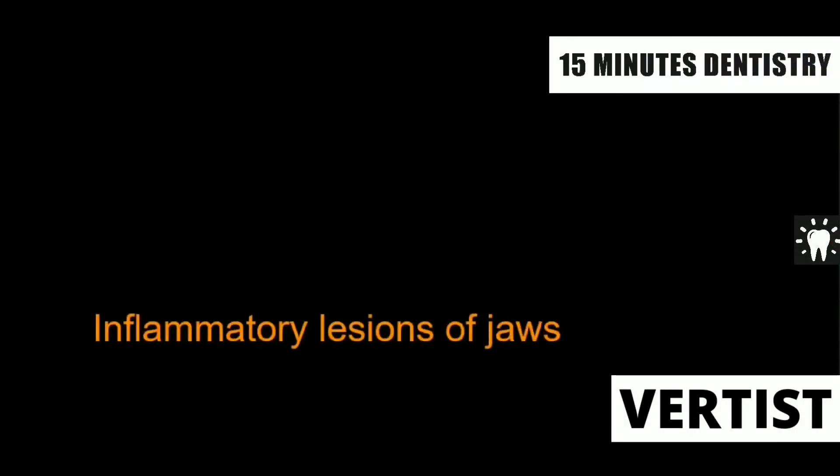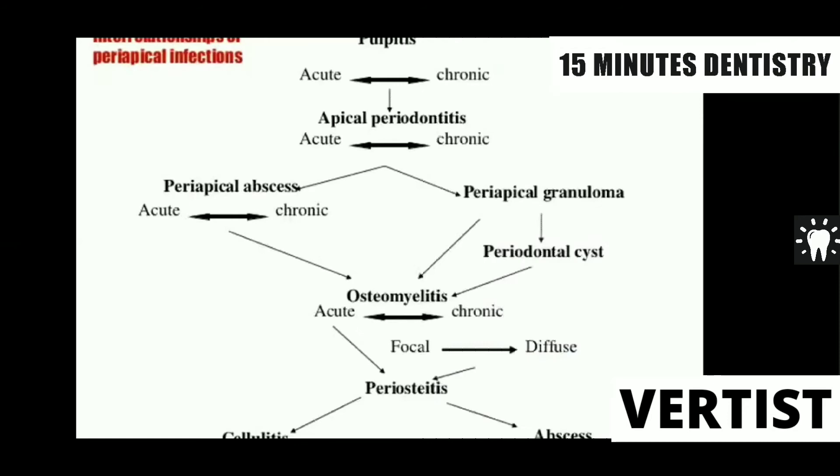We will go for the interpretation of the inflammatory lesions of the jaw bone. The main focus of dental caries are the pulp and periapical pathology. Pulp and periapical pathology — pulpitis is the most common lesion which will be seen.